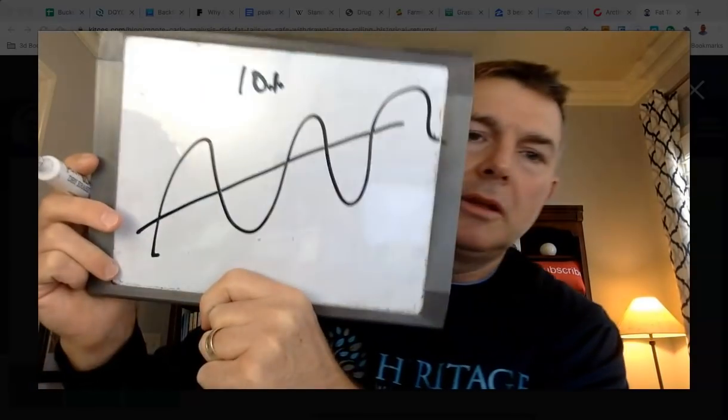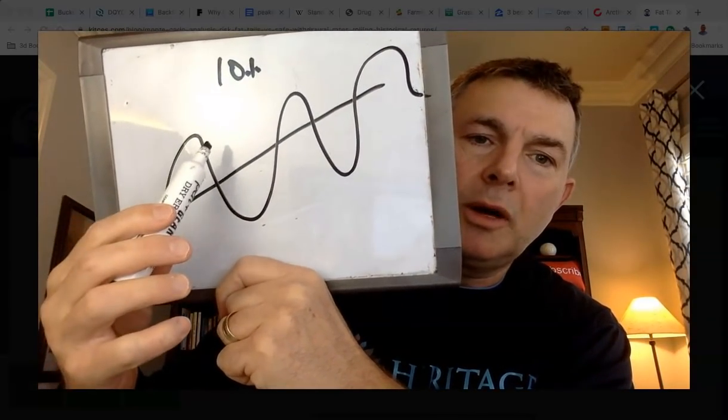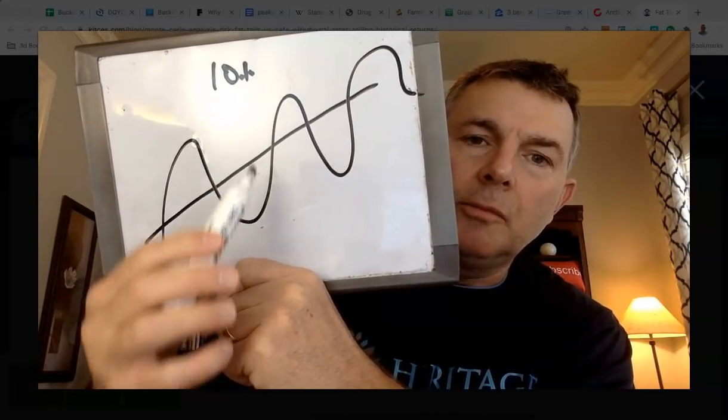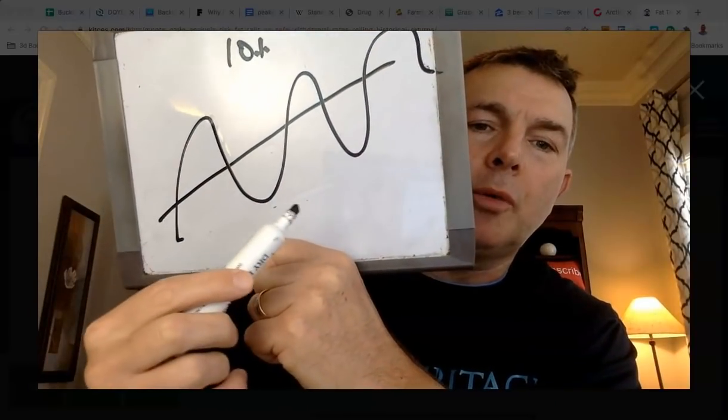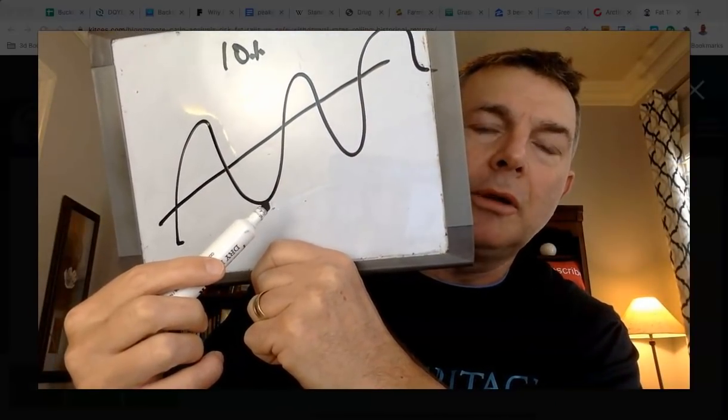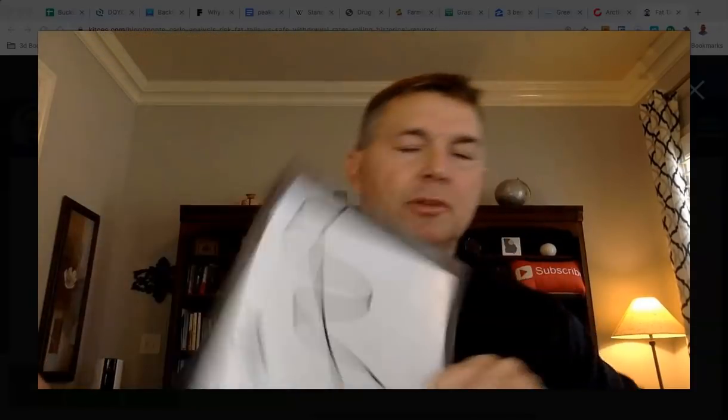The reason the four percent rule came in is because while the average is ten percent a year, the markets go up and down. Here you might have gotten 20%, here negative 10%, here 13%, here negative 8% — the trajectory is to the northeast but it's still up and down. And it's a whole lot different pulling 7% from a portfolio that's down versus one that's up. If you catch a bad cycle — 2000, 2001, 2002 — you're doomed.